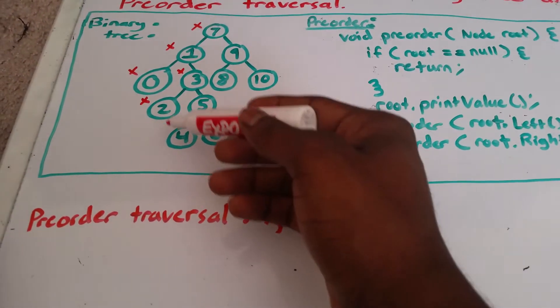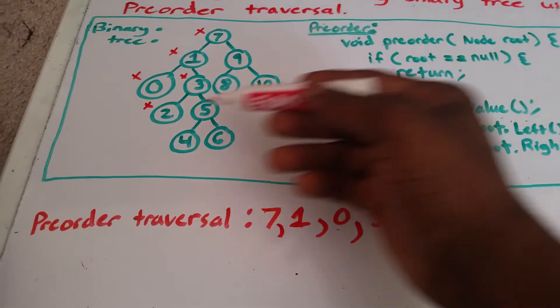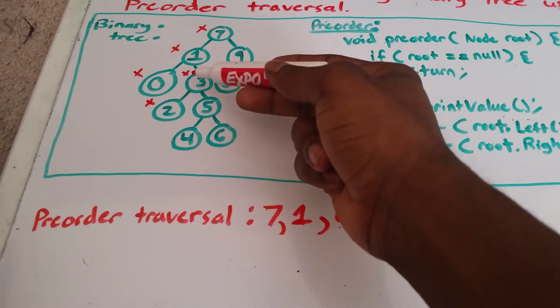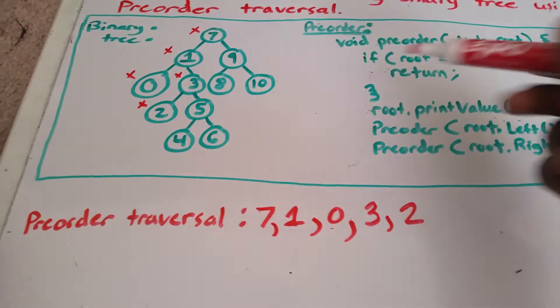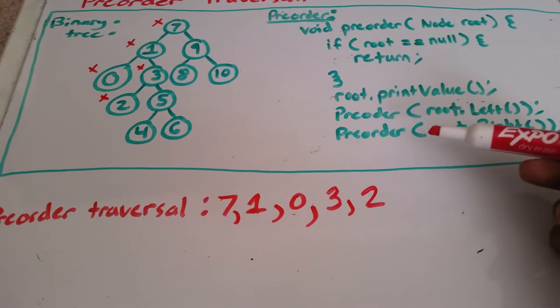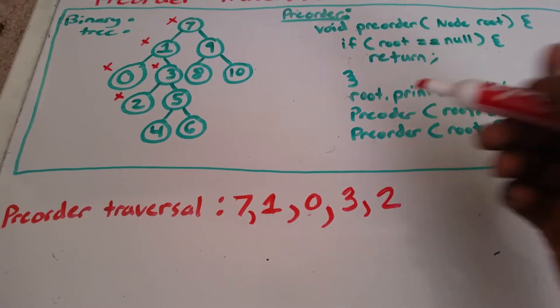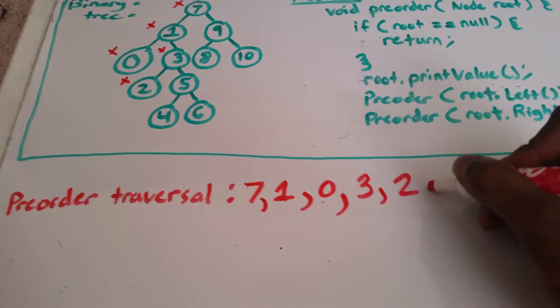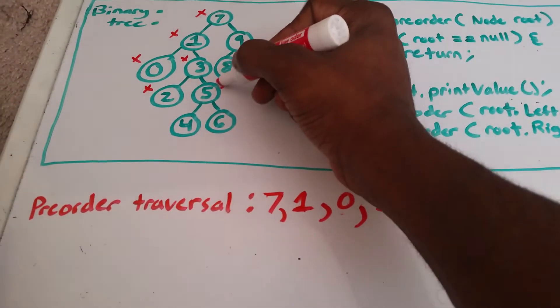Now we're going to go to the right of 2, and there's nothing there. So we return back to 2. We're done with 2. We go back to 3. We're done with 3, except for going to the right of 3. So now we need to go back and we need to go to the right of 3. And to the right of 3 is 5. So we go ahead and we print 5. Mark this off.